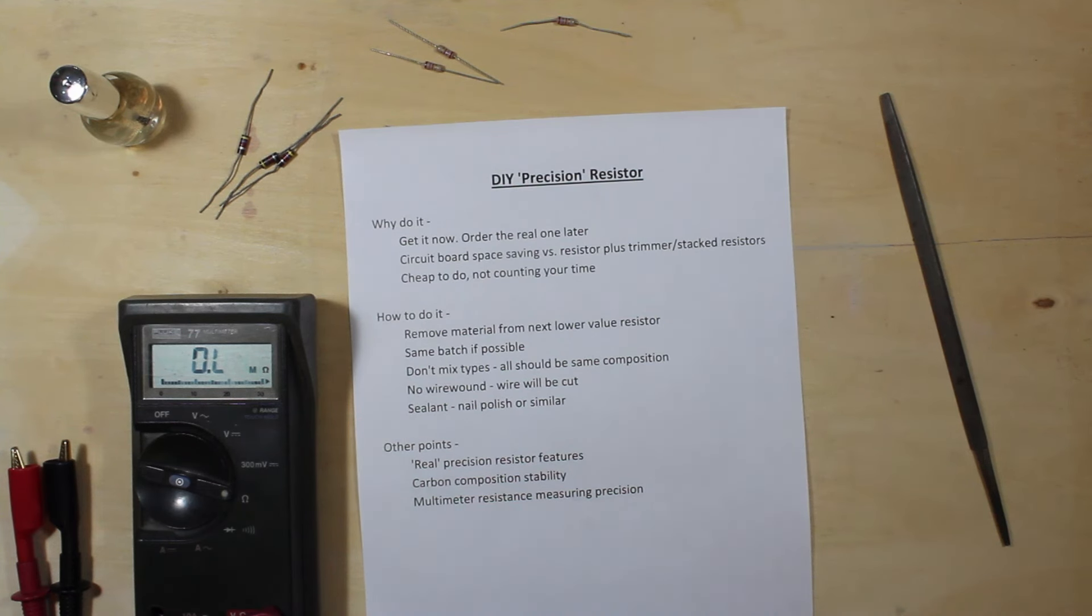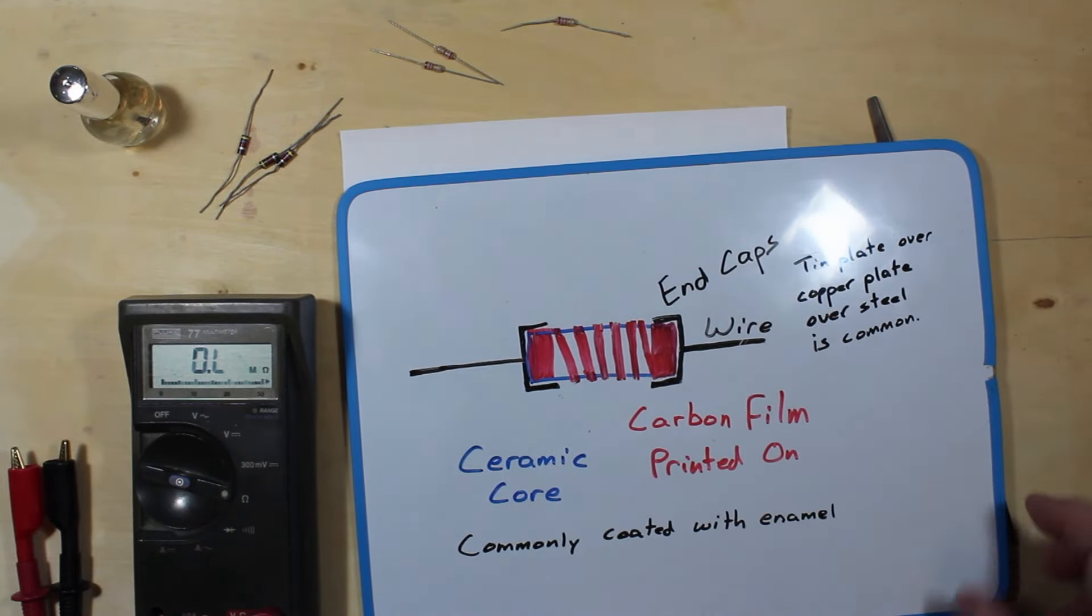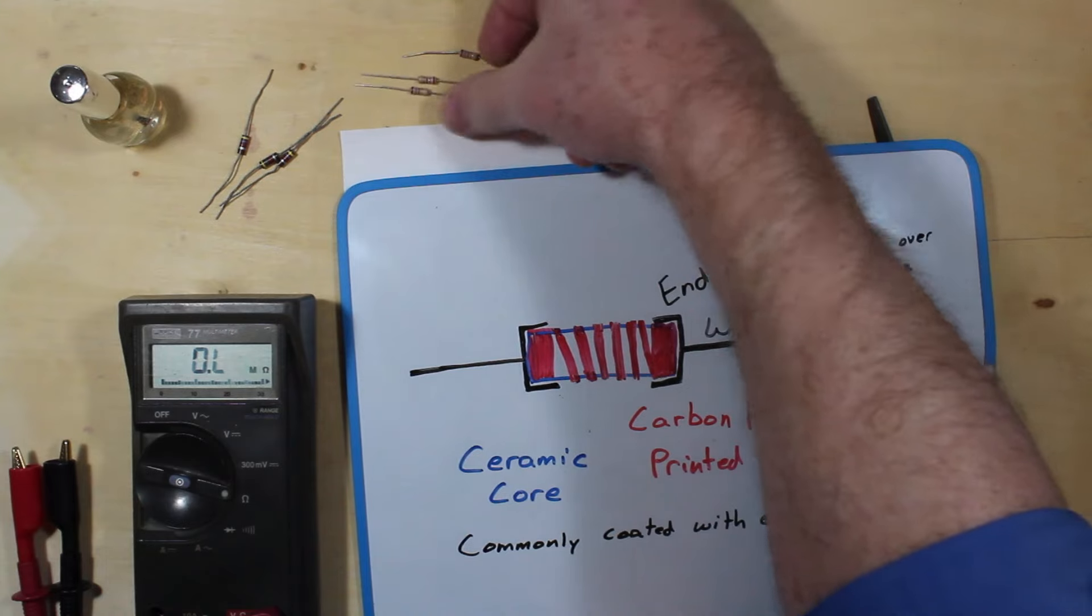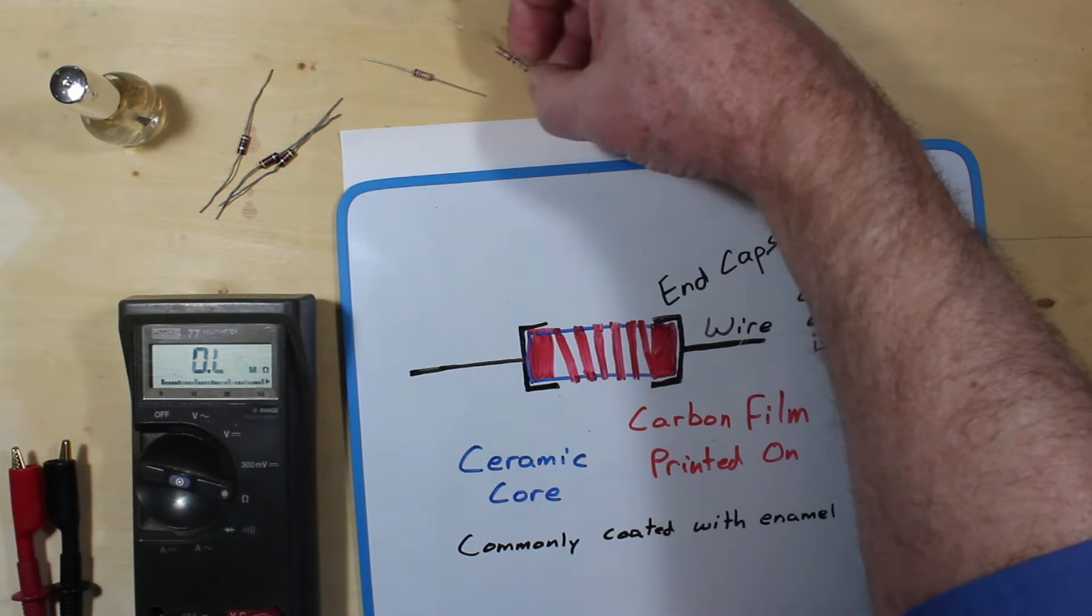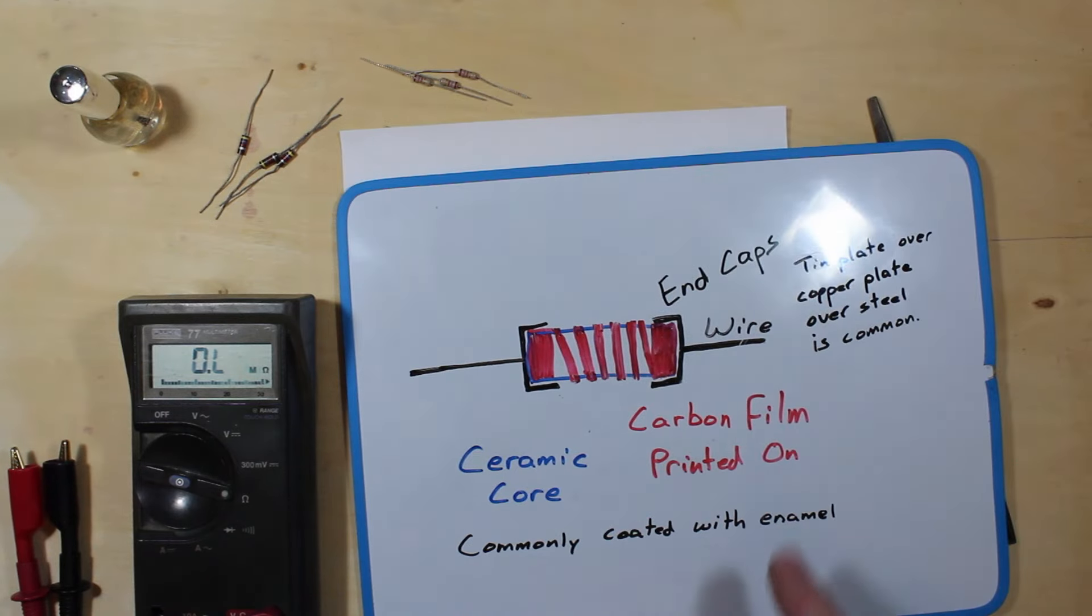The first one that we're going to do is the more common style that you see these days, which is these are 2700 ohm resistors here and these are carbon film style. That's typically what you see and this is how they're built, how they're made internally.